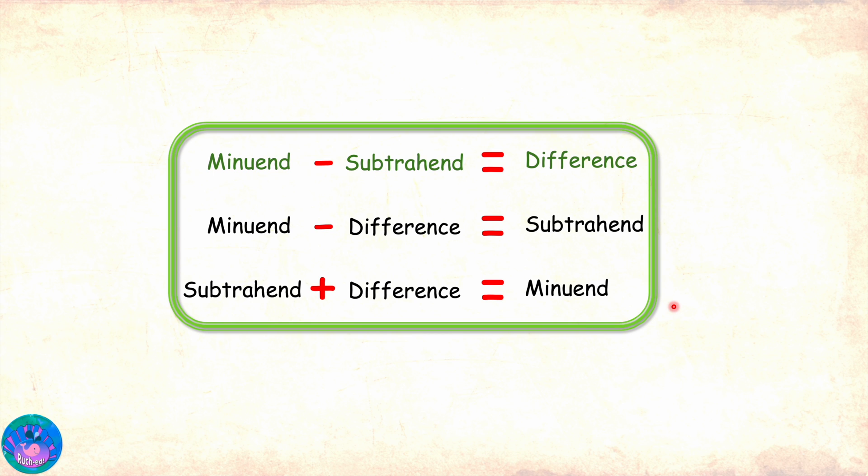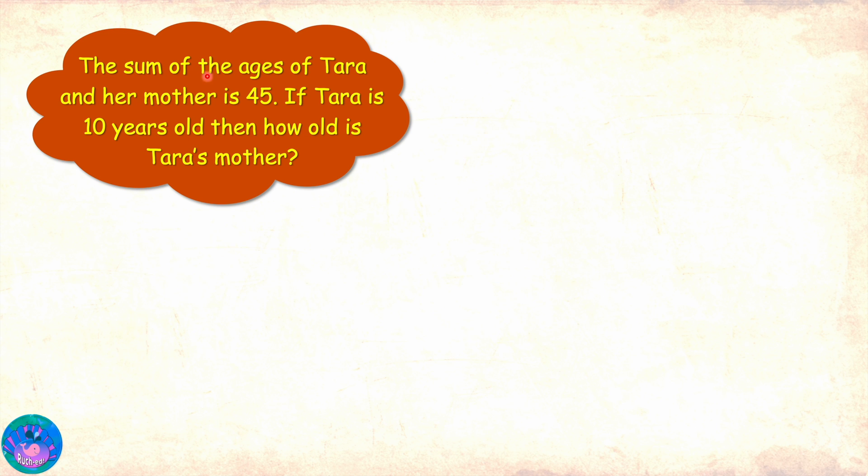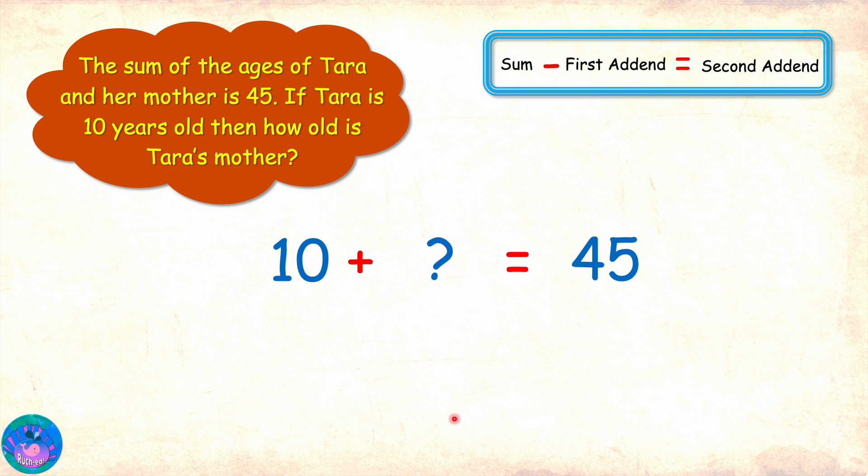Well, let us see some examples of problems we can solve using this knowledge. The sum of the ages of Tara and her mother is 45. If Tara is 10 years old, then how old is Tara's mother? Now Tara's age is 10. And if to that we add her mother's age, which we do not know as of now, the answer is 45. Here 10 is the first addend. We need to find the second addend and the sum is 45. Now we know that if from the sum we subtract the first addend, then we get the second addend. 45 minus 10, which is 35, is the age of Tara's mother.